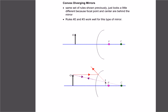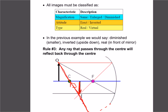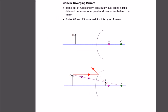Now let's see what happens with a convex mirror. Convex mirrors we often call diverging. The reason we call concave mirrors converging is that all the rays converge to a point — they all go through the focus and converge. That's why that name is used.